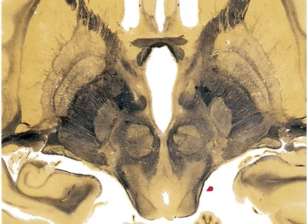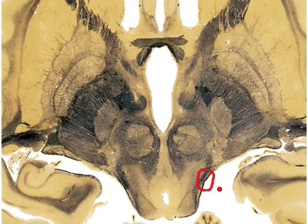We also have the spinothalamic tract right here, which is a bundle of fibers carrying information about pain and temperature originating from the spinal cord, taking it to the thalamus. And we also have that over here as well.